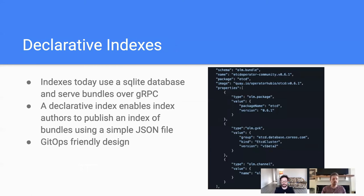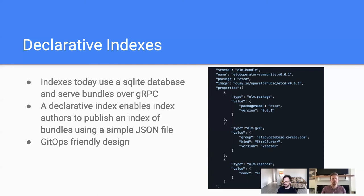Another big thing that we're working on right now is around declarative indexes. Indexes today, as I described, are a composition of bundles — they package all the bundles into a SQLite database internally and then expose the bundles API over a gRPC connection. That works well, but it generally produces some edge cases and pain points. What we want is to have a more GitOps-friendly design in that we have a declarative index config file, which is essentially just a JSON blob that users can use to edit, replace, and update in place the different bundles that compose the index, providing a really nice experience for modifying an existing index or building an index from scratch. Part of this also involves using other open source projects like CUE lang to help validate that the index JSON file meets certain conditions, making it much more easily extendable and usable by other projects.